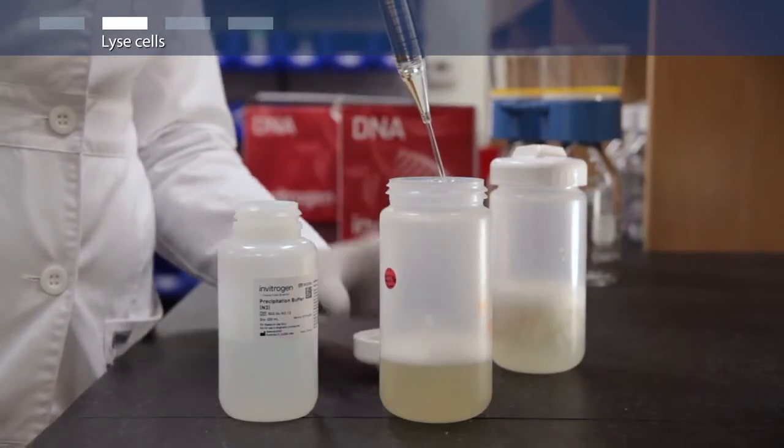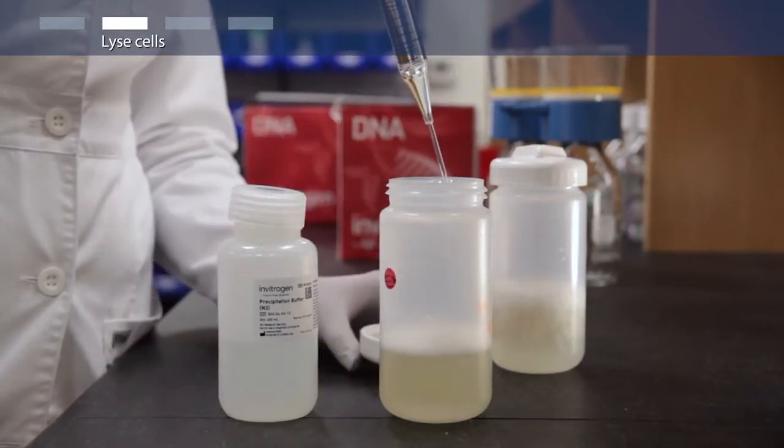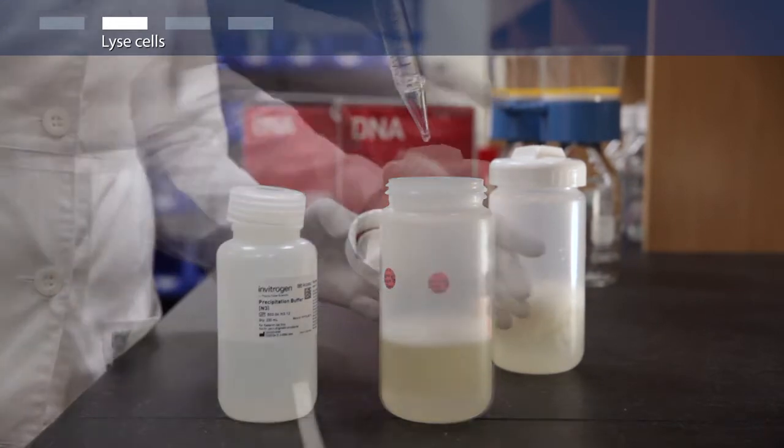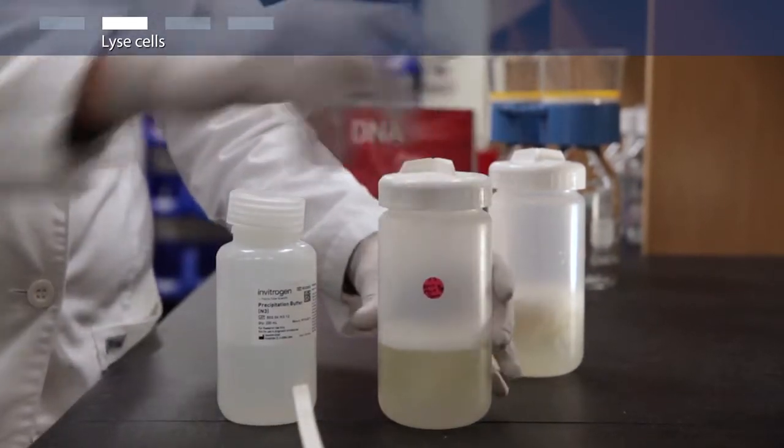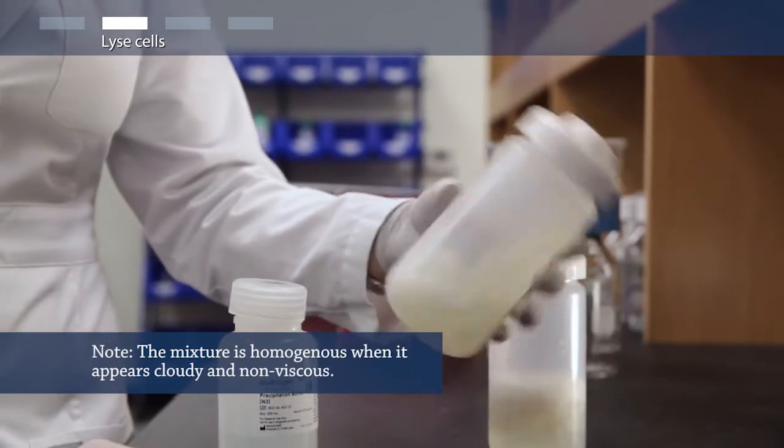Add 50 milliliters of precipitation buffer and immediately mix by inverting the tube until the mixture is homogeneous.